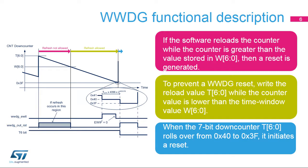If the software refreshes the watchdog while the down-counter is greater than the value stored in bits W[6:0], a reset is generated. This happens when the application refreshes the watchdog too early. No interrupt is generated in this case. To prevent a window watchdog reset, the watchdog refresh must happen while the down-counter value is lower than the time window value and greater than 0x3F. This is illustrated by the green area. The refresh operation consists of reloading the down-counter with bits T[6:0].